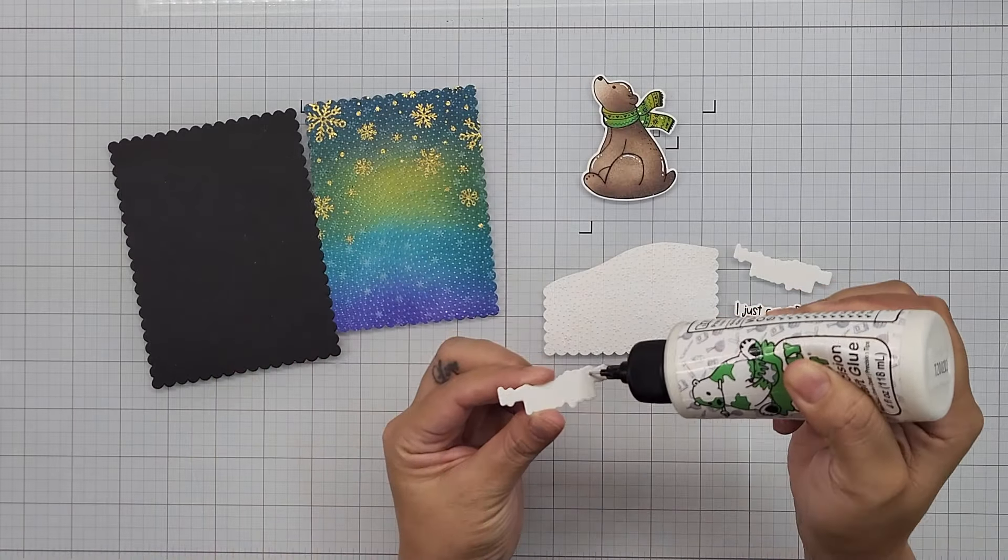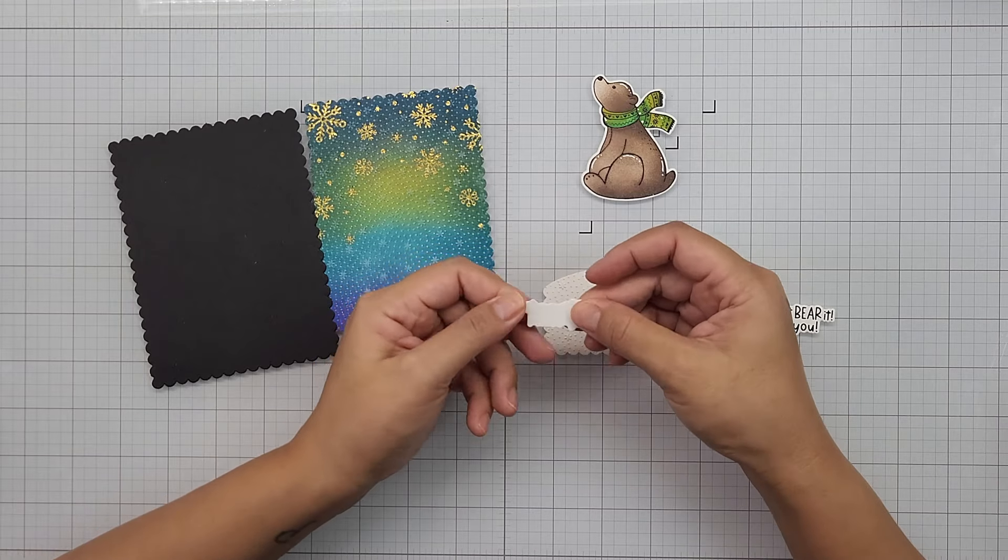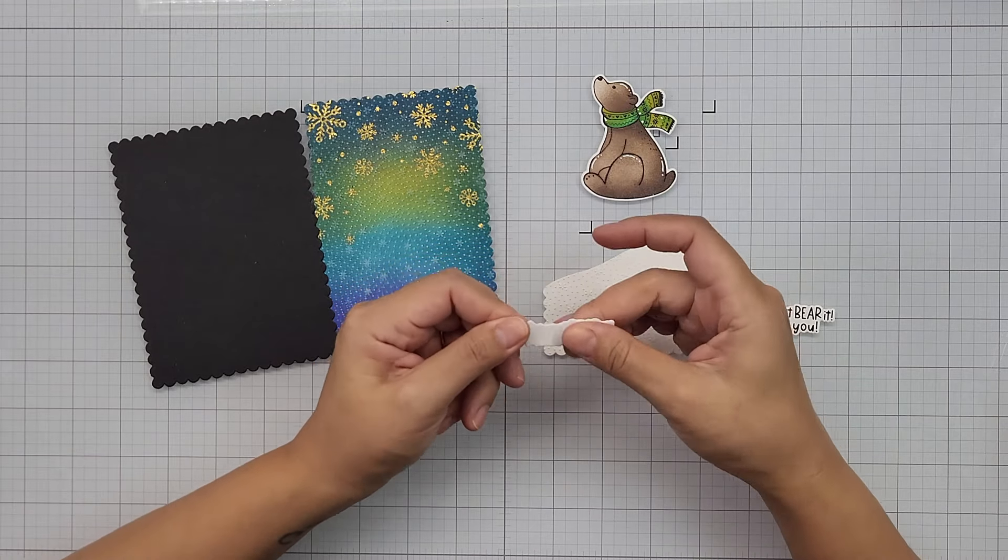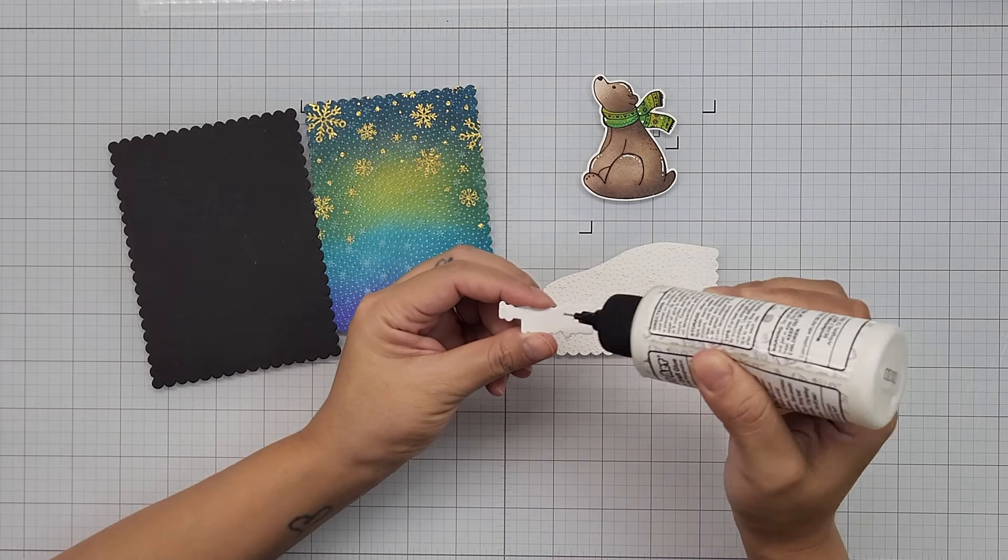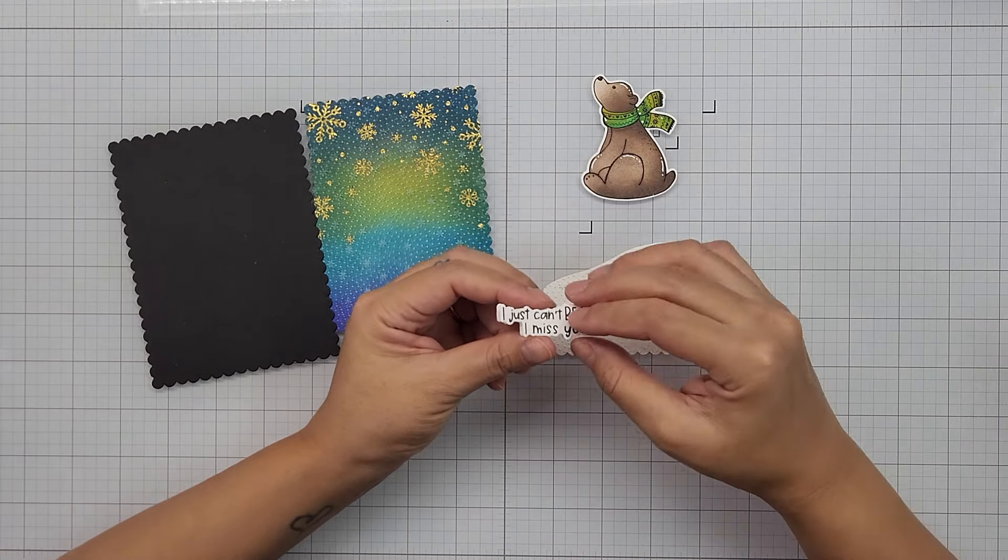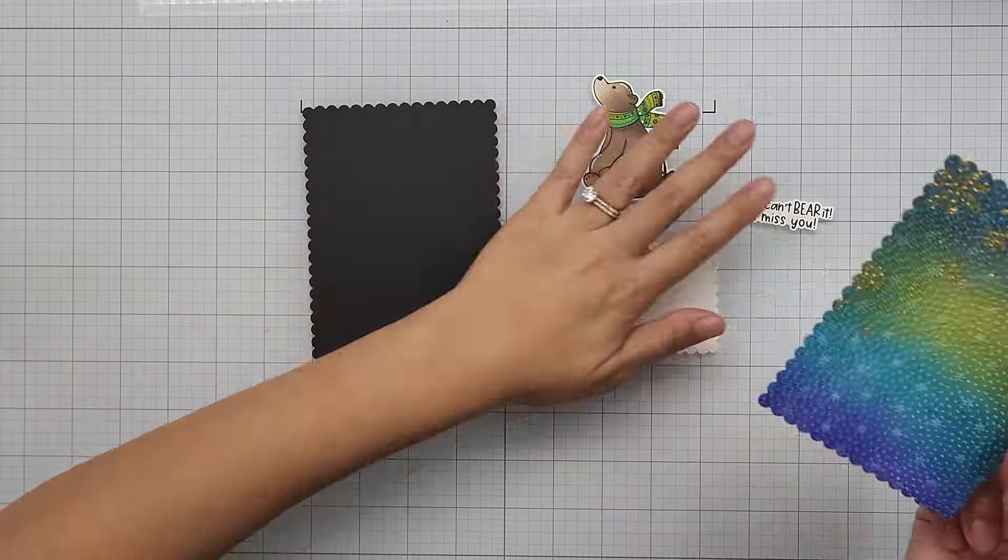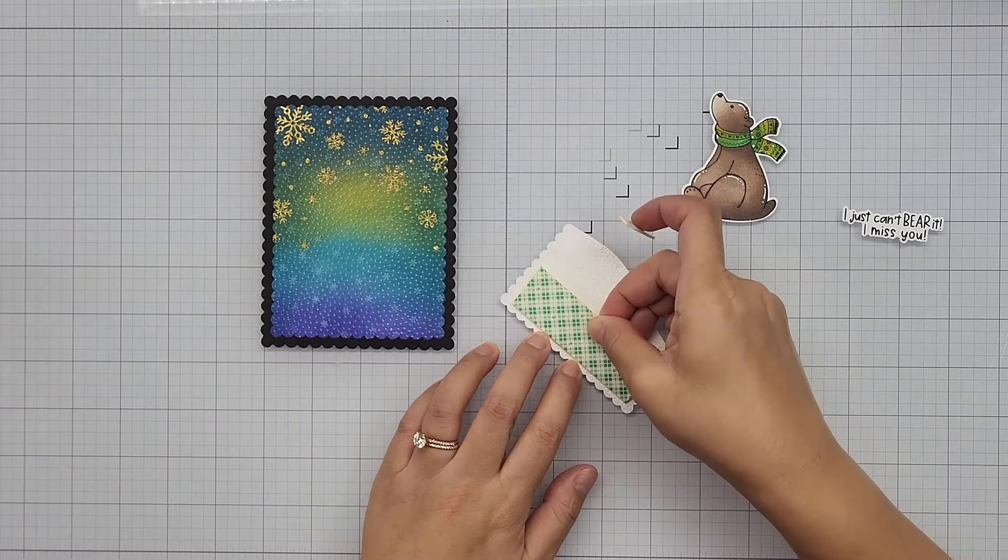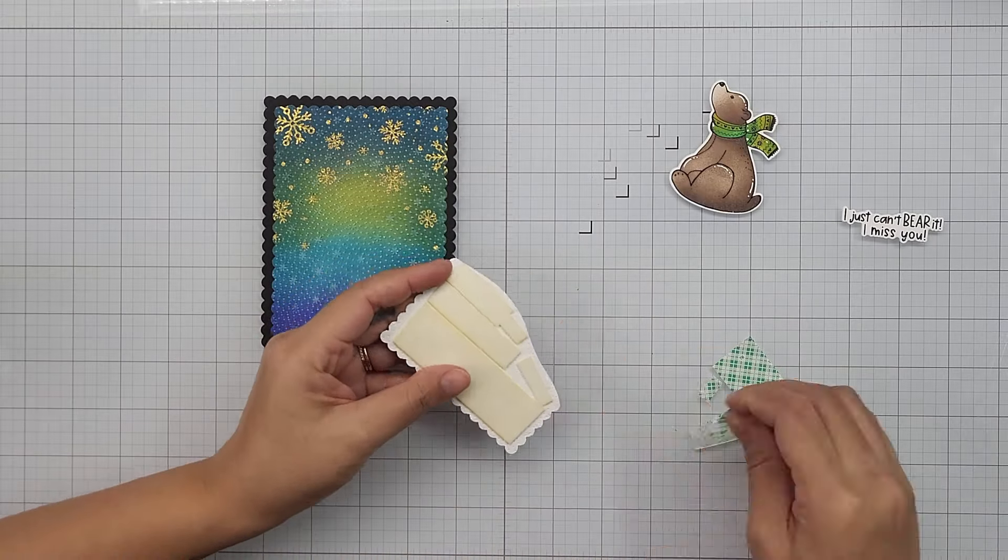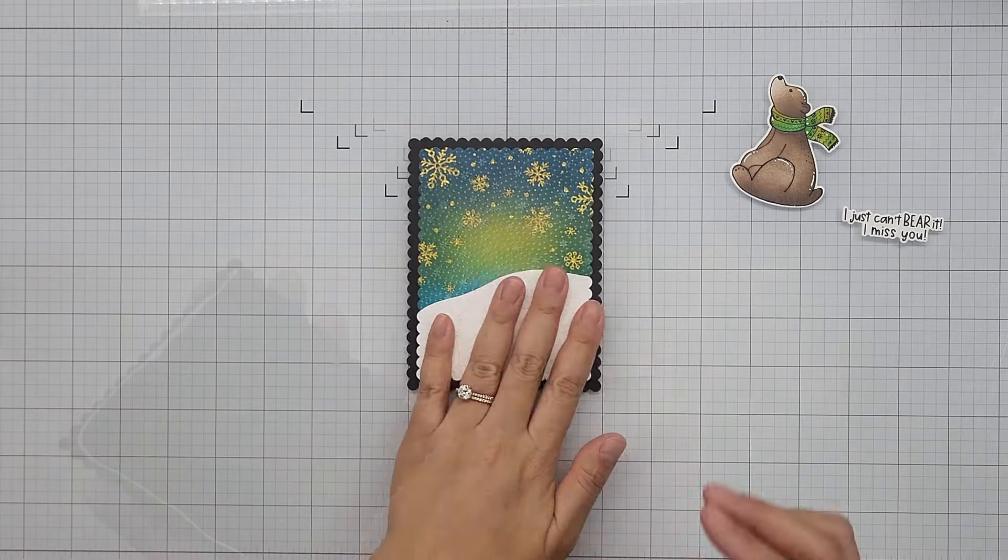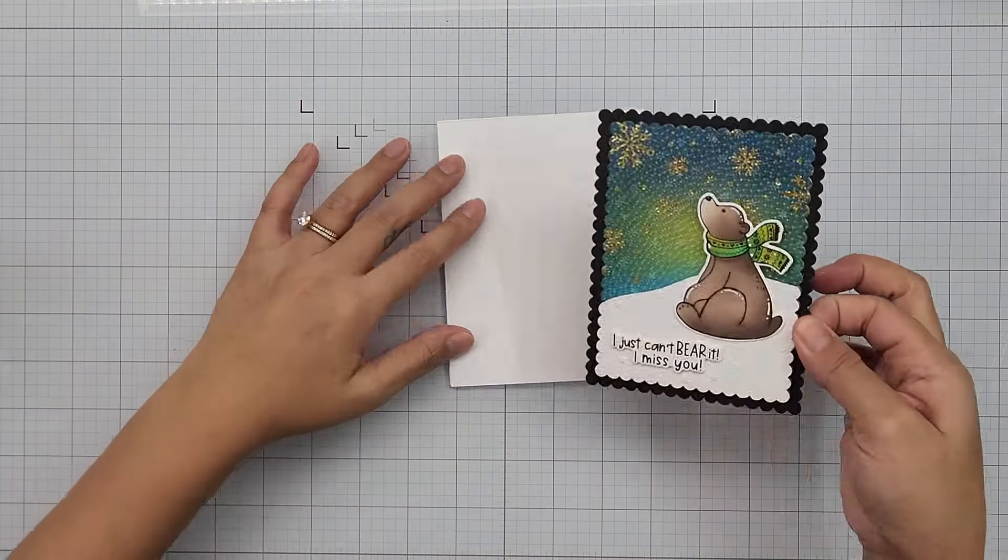So it's time to assemble. Off screen, I use the next size Petite Scallop Rectangle Stacklet to cut out of Black Licorice cardstock. I also use the coordinating dies for the sentiment and cut that out a few times to create dimension by layering it. With liquid adhesive, I use foam tape on the back of the snow bank and pop that onto the panel, aligning it with the scallops on the foil panel. I use liquid adhesive and foam squares to pop up the bear and the sentiment. To finish it off, I adhere the final panel to the top folding card base. And that is it.